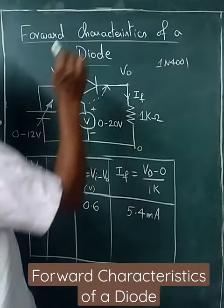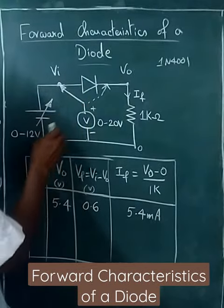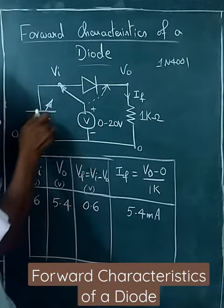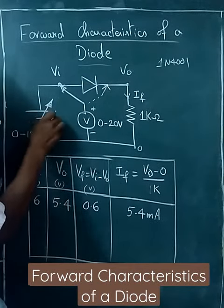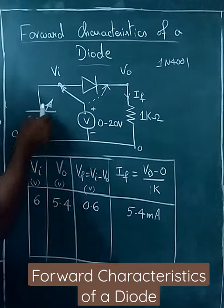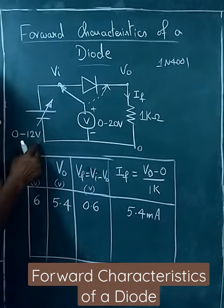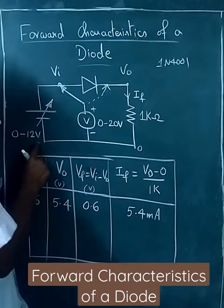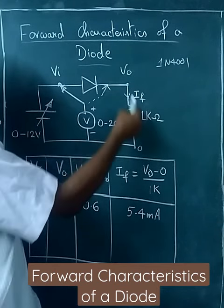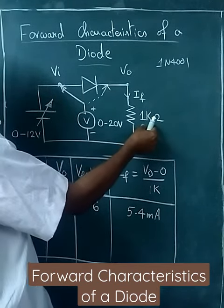Forward characteristics of a diode. The diode is forward biased. The input supply is 0 to 12 volts, and the series resistor is 1k ohm.